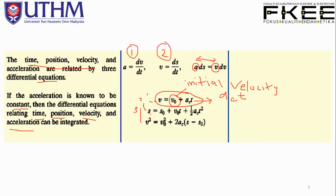For constant acceleration, we have the equations: s = s₀ + v₀t + ½a_c·t², and v² = v₀² + 2a_c(s − s₀), which relates the new distance and initial distance.